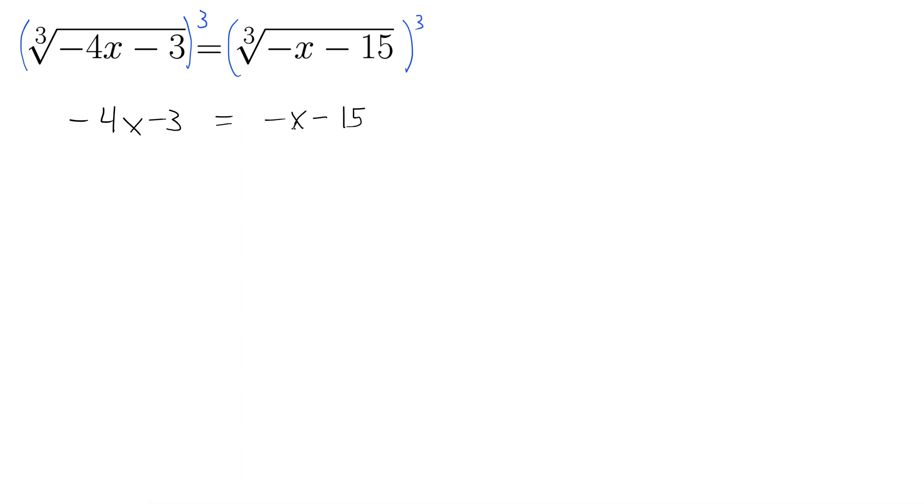Okay, so not a whole bunch of overthinking on that one. We're not completely out of the woods yet. We still have to solve for x, so I'm going to add an x to both sides. This gives us negative 3x minus 3 equals negative 15.